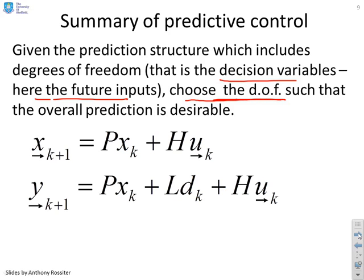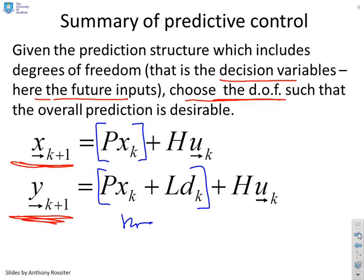So there's my predictions. I can either have predictions for the future states or predictions for the future outputs. And the key thing is these are separated into parts which are known. So those bits are known.